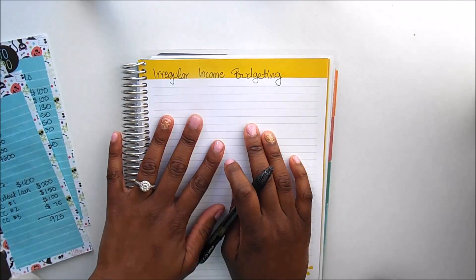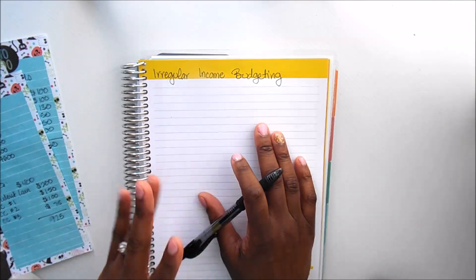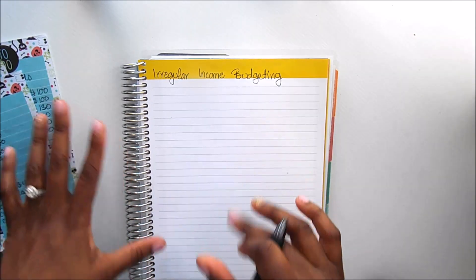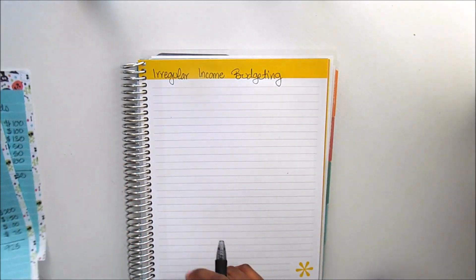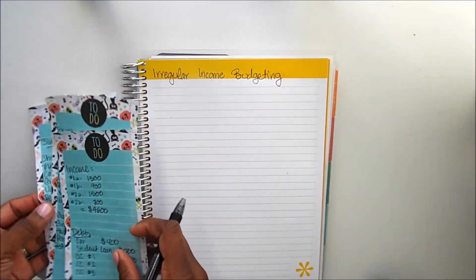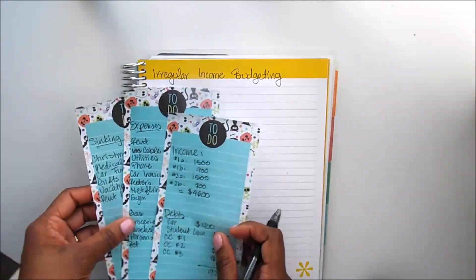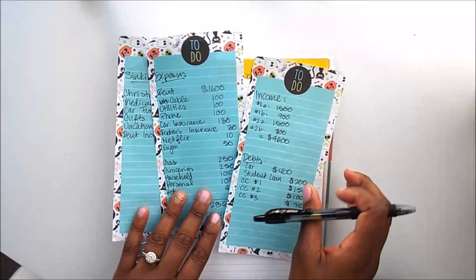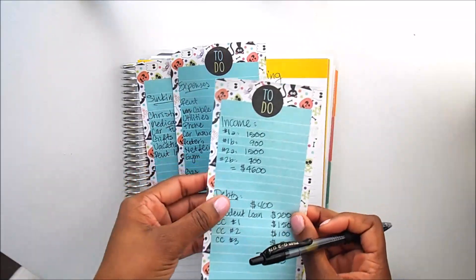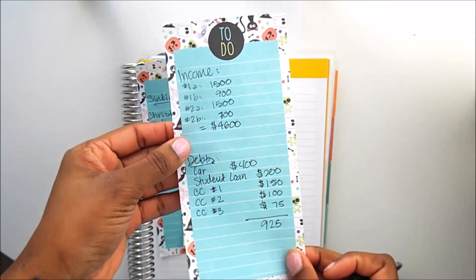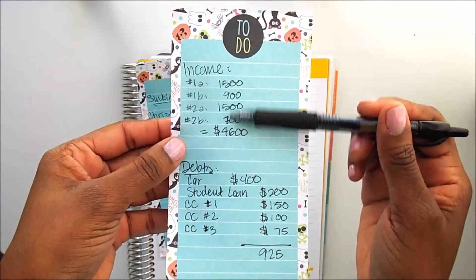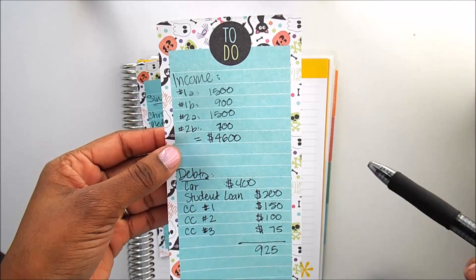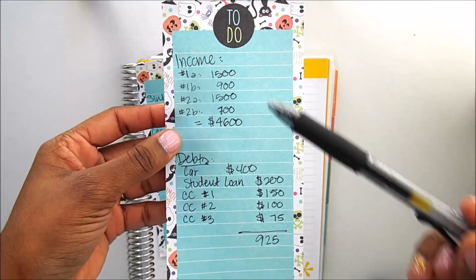Alright guys, so the first thing that I want to clarify is that these numbers are 100% fiction. I just kind of went based on things that we use within our budget each month, but each number is totally made up.